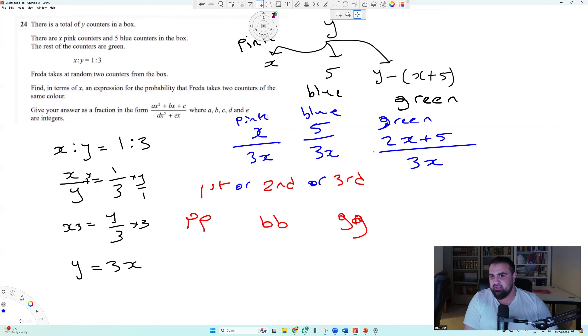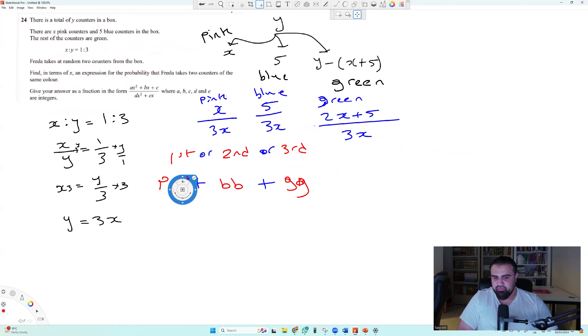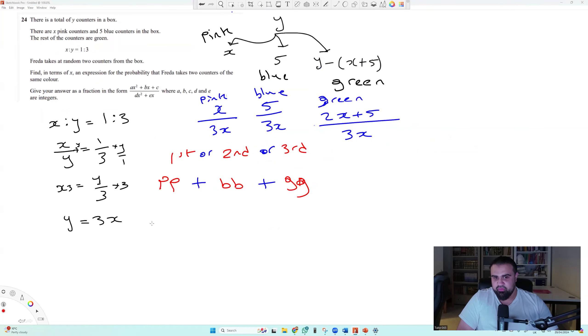So the question specifically says, Frayda takes that random two counters from the box. You have to be careful here because it says she takes two counters. So what are the possible things? First outcome will be pink, pink. Second outcome will be blue, blue. And third outcome will be green, green. Now notice I said that can happen, or that can happen, or that can happen. So this is an add situation.